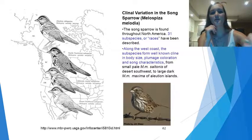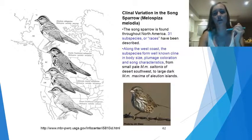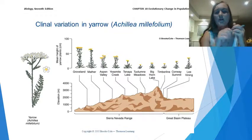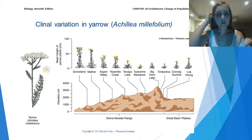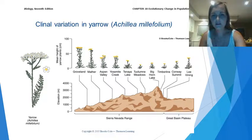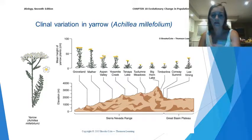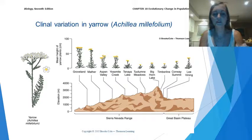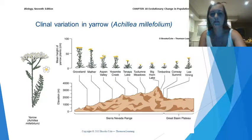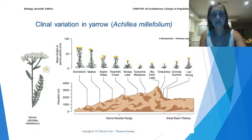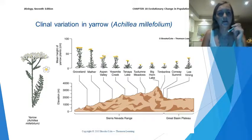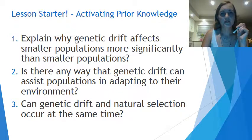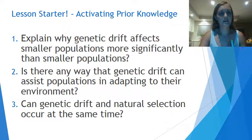So a cline is where you see that gradient occurring. Here's another example — you can see geographically where the cline is occurring; they're basically next to each other, and you can see that phenotypic change occurring across the cline. Thanks for listening.